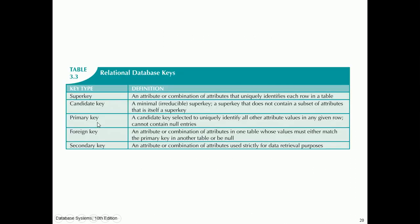Summary of relational database key definitions: a super key is an attribute or combination of attributes that uniquely identifies each row in a table. A candidate key is a minimal or irreducible super key — one that does not contain a subset of attributes that is itself a super key. The primary key is a candidate key selected to uniquely identify all other attribute values in any given row and cannot contain null entries. A foreign key is an attribute or combination of attributes in one table whose values must either match the primary key in another table or be null. A secondary key is used strictly for data retrieval purposes.